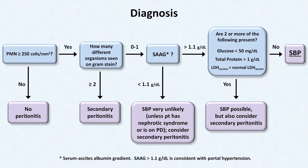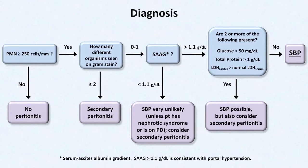So if the ascites fluid culture is neither sensitive nor specific and is not used in the diagnostic algorithm, why do we even bother to do one? It's mainly to help guide our antibiotic coverage, particularly in the event of a highly resistant pathogen. The culture can also rarely be helpful when it grows an unusual or unexpected organism and the patient is failing to improve on conventional treatment. Finally, if the culture grows two or more organisms but there is no other indication of secondary peritonitis, it suggests that the bowel was hit with the paracentesis needle during the procedure.